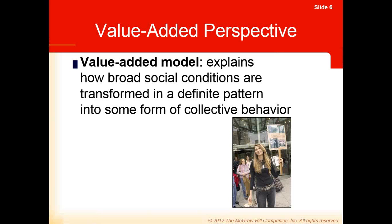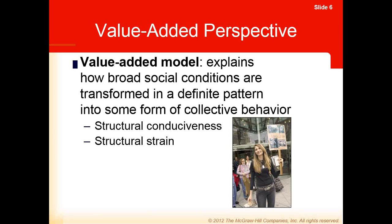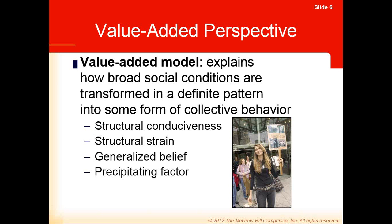The value-added model looks at how broad social conditions are transformed in a definite pattern into some form of collective behavior. Some of the things that need to exist are structural conduciveness — the potential for collective behavior must exist. The structure has to support people being allowed to act. There also has to be structural strain, where something in society is not serving members well enough. A generalized belief that society should handle a particular situation, a precipitating factor, and mobilization for action.